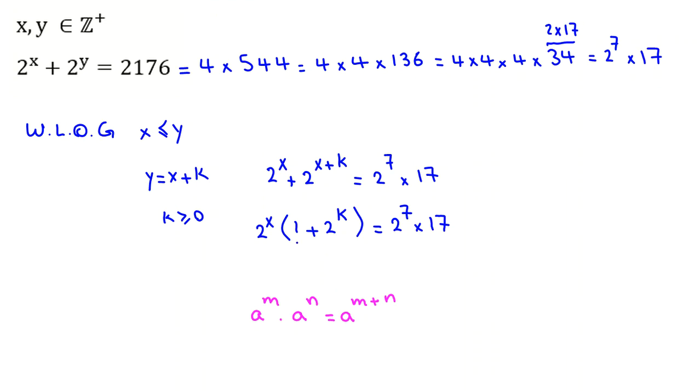Here, this is the odd part. If k is 0, then it will be power of 2 on the left-hand side, because 2 to the 0 is 1 plus 1 equals 2. But right-hand side is not power of 2 because we have 17. So k is at least 1.